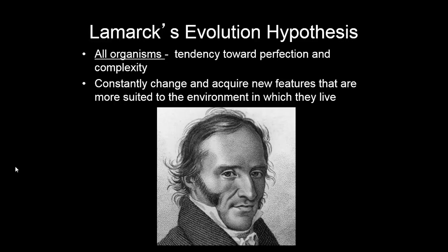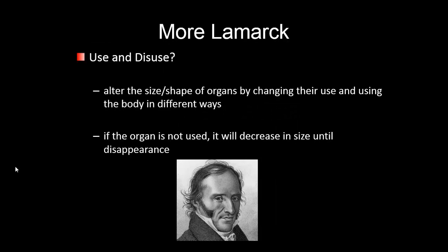In Lamarck's observations, he saw that all organisms have a tendency toward perfection — meaning they're very well adapted to their environment. He said that animals are constantly changing, which was a relatively new idea, and acquire new features more suited to the environment in which they live. He called this use and disuse: if you use your muscles, they'll get big and you'll pass those big muscles on to your offspring. If you don't use them, they'll get small and your offspring will have small muscles too. Basically, if you use something its appearance grows; if an organ is not used it will decrease in size and potentially disappear — like the legs of a whale.